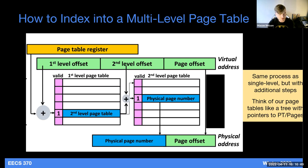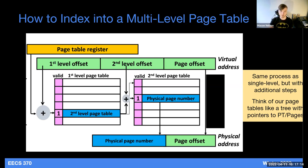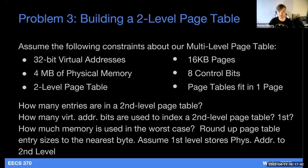Regarding performance: now we're accessing the page tables multiple times, and every memory access is costly. Before virtual memory, we would just access memory. Now with a multi-level page table, we access level one, then level two, then finally our actual data. We've greatly increased the number of accesses in order to gain security, consistency, and the ability to access all virtual address spaces. Let's figure out the size of a two-level page table.